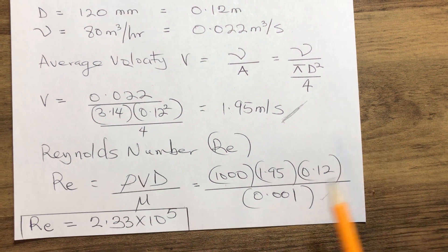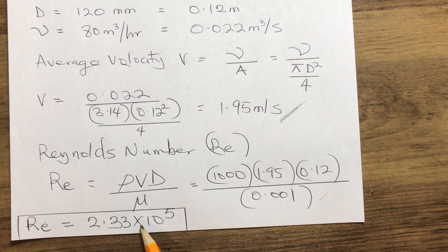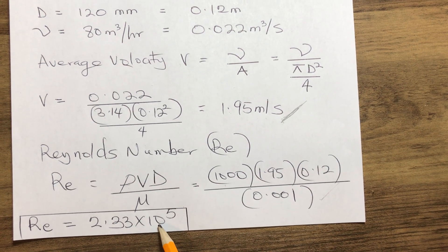By calculating, we have our Reynolds number Re = 2.33 × 10⁵.